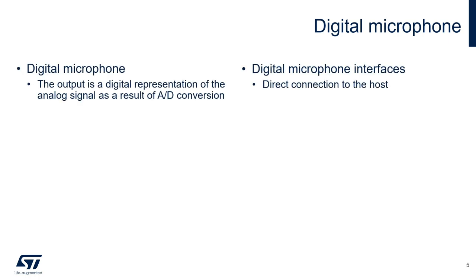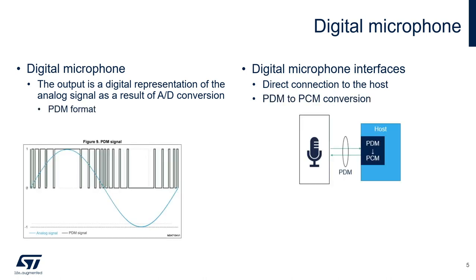On the other side, a digital microphone moves the complexity of the analog front-end as well as the digital conversion inside the component itself, providing the user with a digital signal which is far more easy to handle and transmit. The output of a digital microphone can be directly acquired by the host. The most common format used in digital microphones is PDM, or Pulse Density Modulation. It consists of a stream of bits in which the relative density of the pulses corresponds to the analog signal's amplitude.